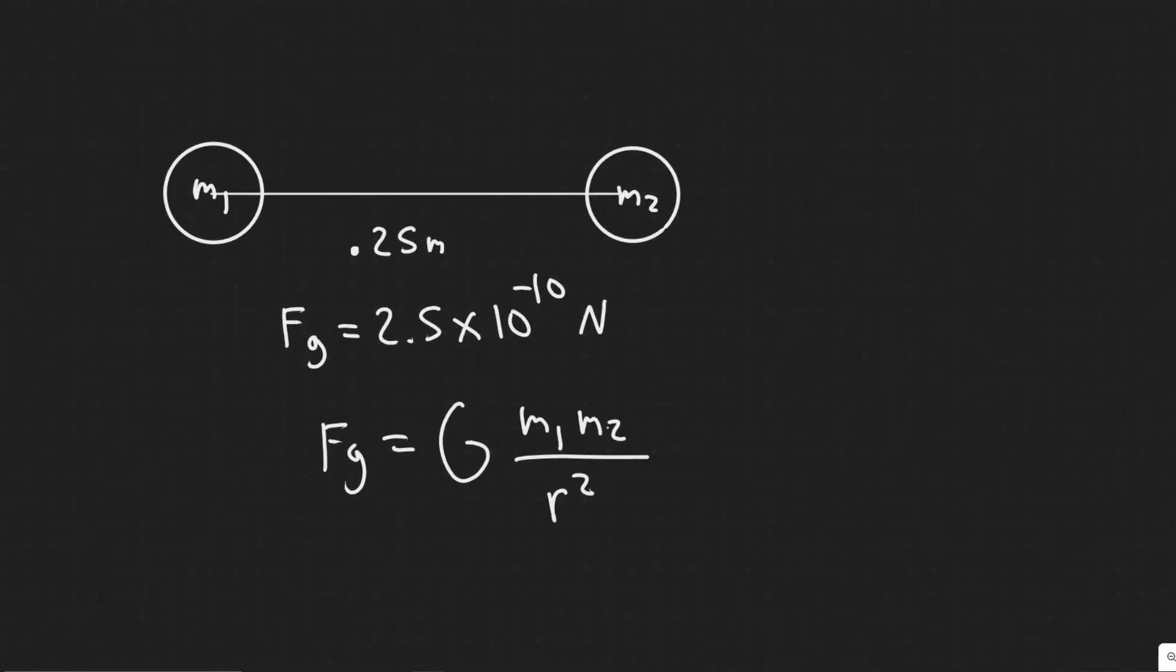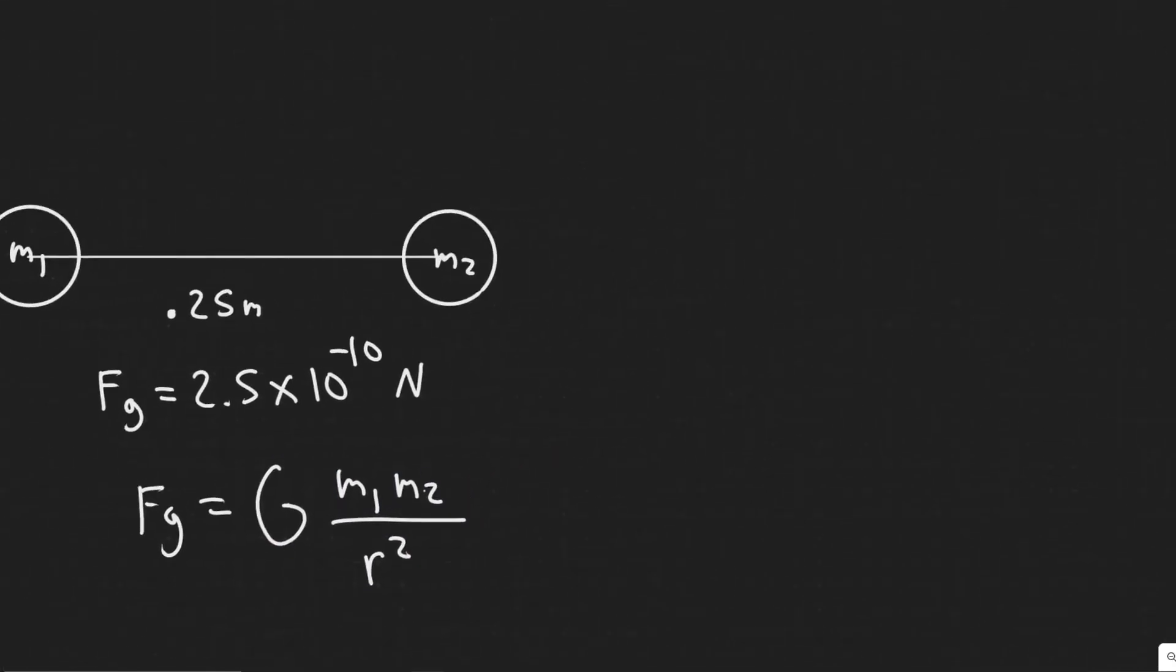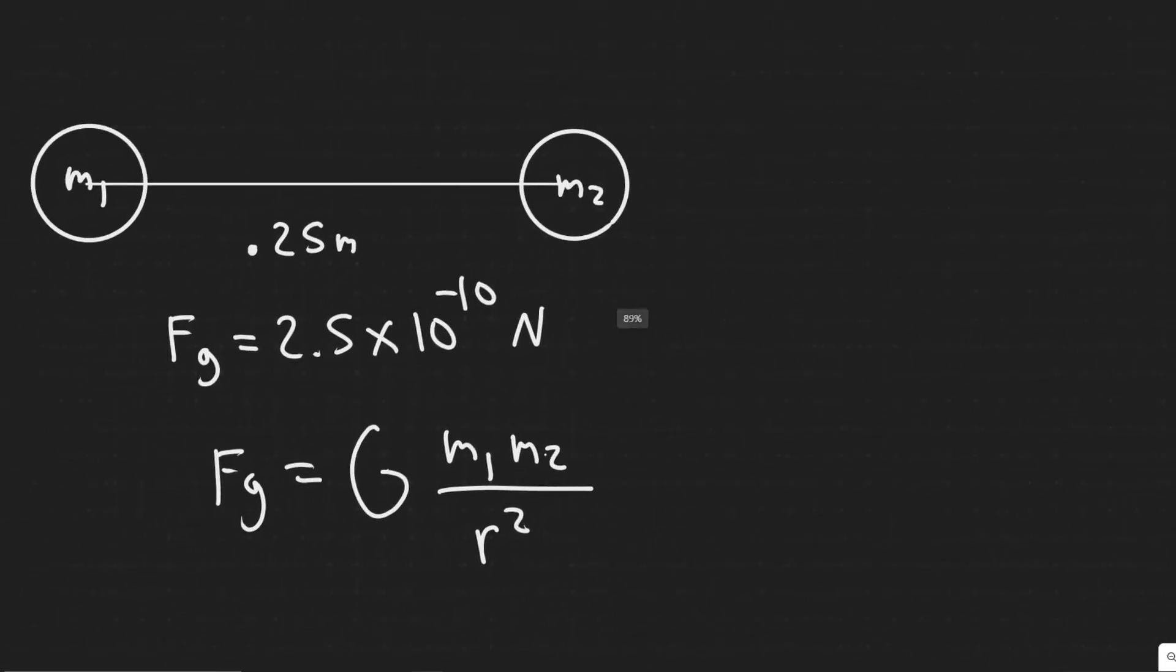So in this problem the way we're going to do it is we have to get, if you notice we have the force due to gravity that they're going to experience, we know their distance which is the radius, we know G but notice we have two masses and we don't know their values. So the way we do it is by subbing them in.